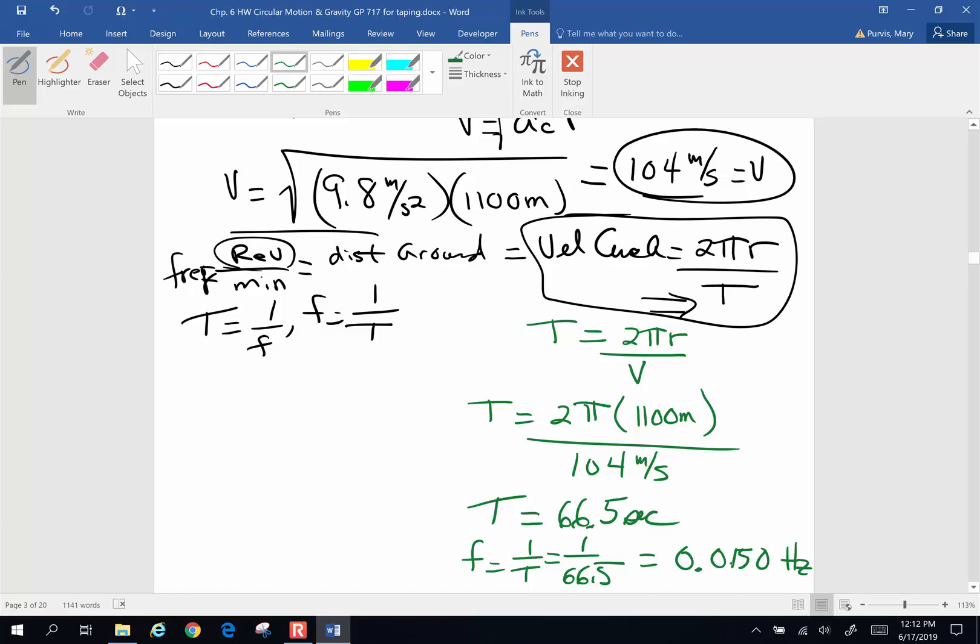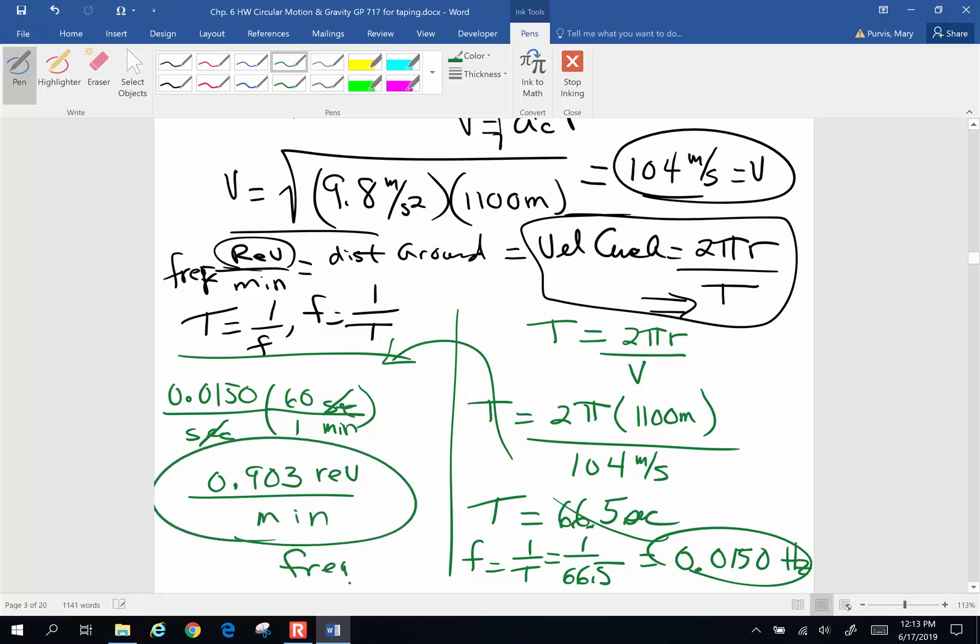And I want to convert that to revolutions per minute. So I'm going to go take this back over here. And I've got 0.0150 per seconds. And I want to get rid of seconds, go to minutes. There are 60 seconds in a minute, times 60. And I'm going to end up with 0.903 revolutions per minute. And that is the frequency at which it is going to revolve in revolutions per minute. This part is a little tricky and you've got to do a little thinking. All right, that will do for this one. We'll see you later. Bye-bye.